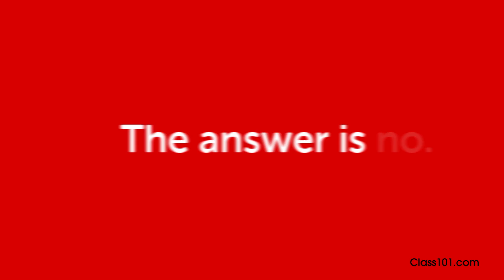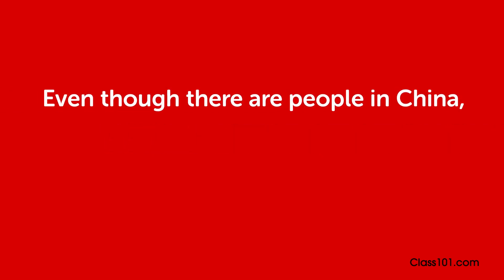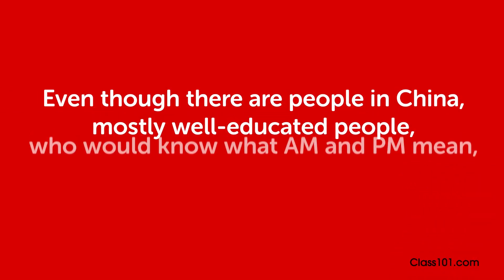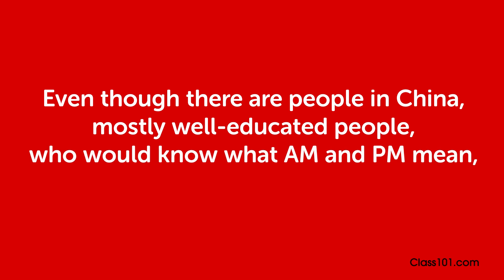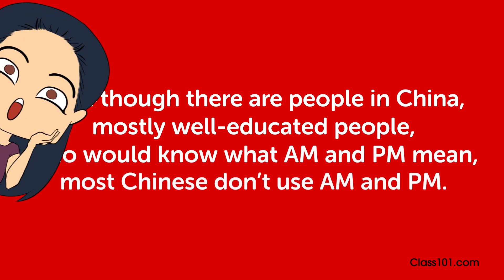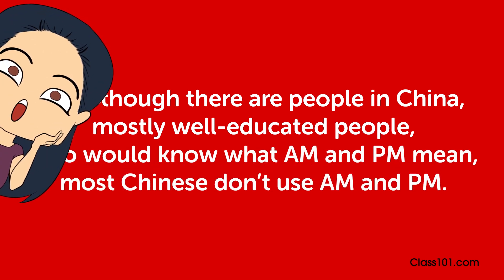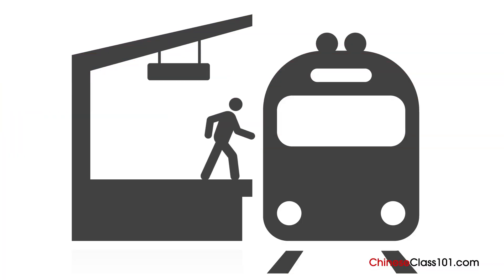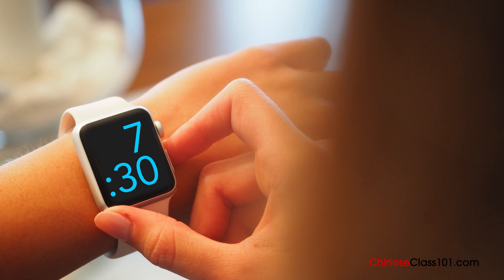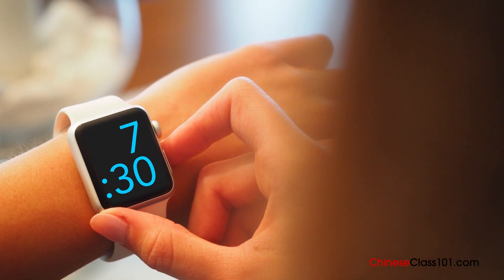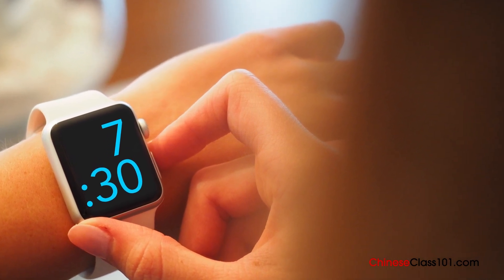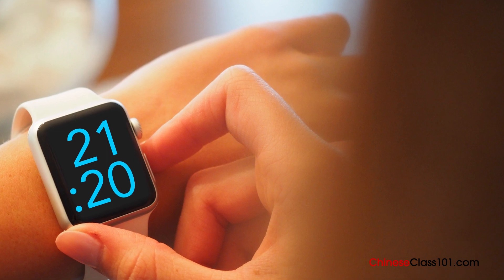The answer is no. Even though there are people in China, mostly well-educated people, who know what AM and PM mean, most Chinese don't use AM and PM. In formal situations, for example on a train schedule, you will often see the 24-hour format for time, such as 0730 or 2120.